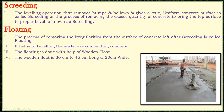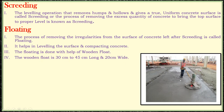Next is floating. In the previous slide we saw floating where they were using a small horizontal plate with a stick attached — that is also called floating. But especially for road construction and industrial plant flooring, a floating machine is used. The process of removing the irregularities from the surface of the concrete left after screeding is called floating. This helps in leveling the surface and compacting the concrete. The floating is done with the help of a wooden float, which is 30 to 45 centimeters long and 20 centimeters wide.